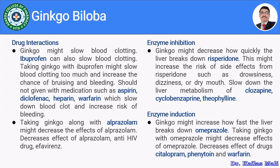Regarding enzyme induction, ginkgo can also induce certain enzymes responsible for drug metabolism, causing decreased plasma concentration. Ginkgo might increase how fast the liver breaks down omeprazole, so taking ginkgo with omeprazole might decrease its effect. By increasing metabolism, the effects of drugs like citalopram, phenytoin, and warfarin are also decreased. In the case of phenytoin, there may be a risk of precipitation of seizures.